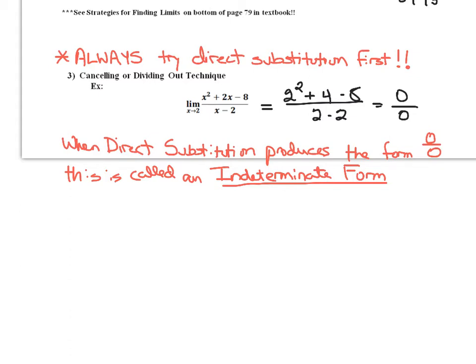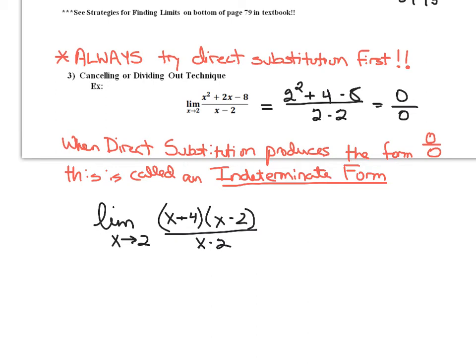When direct substitution produces the indeterminate form 0 over 0, what we're going to have to do is rewrite this limit. One method is cancelling or dividing out. So let's go back to the limit as x approaches 2. We see that x squared plus 2x minus 8 in the numerator is factorable — factoring gives me x plus 4 times x minus 2. I still have an x minus 2 in my denominator, which is what caused that indeterminate form. So I can cancel that like factor and substitute 2 into what's left.